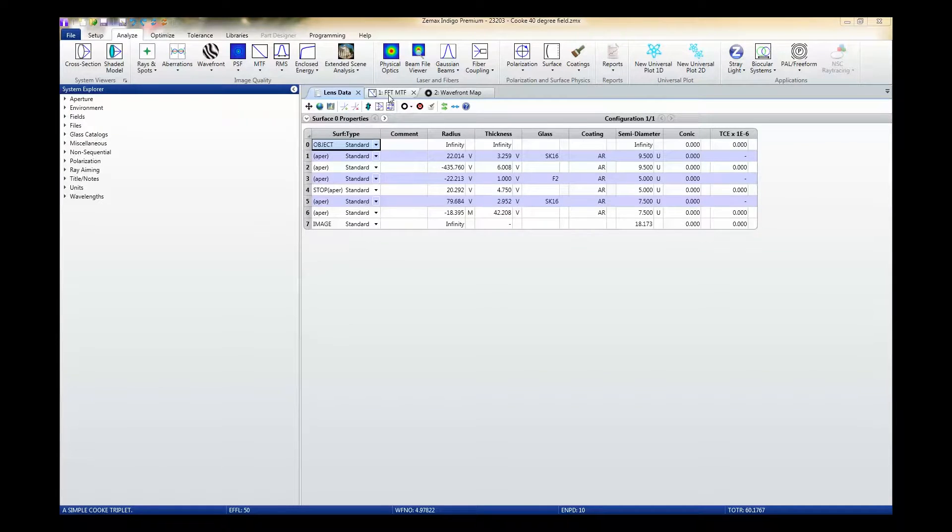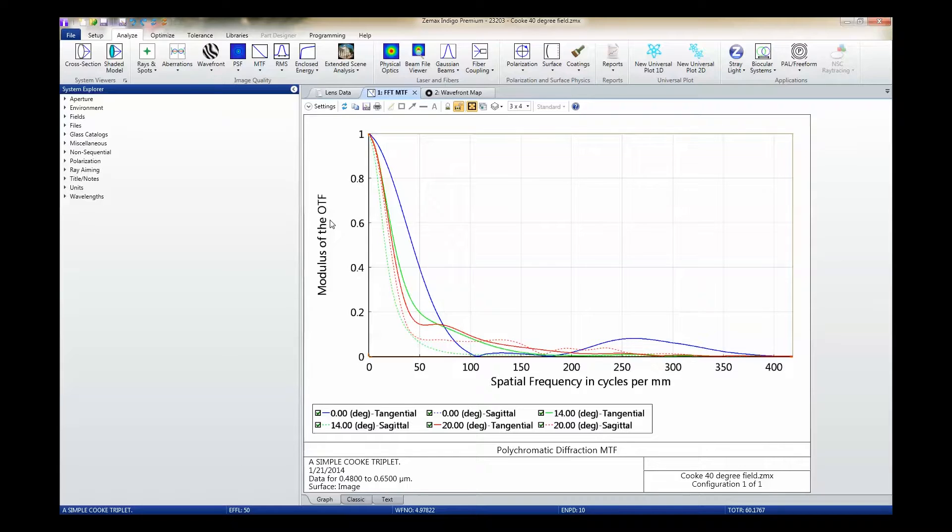An example of 2D data are shown with the FFT-MTF plot. By default, this plot shows data for all of the fields in your optical system. If we wish to remove data from any particular field from the view, we can simply uncheck the corresponding box in the legend.